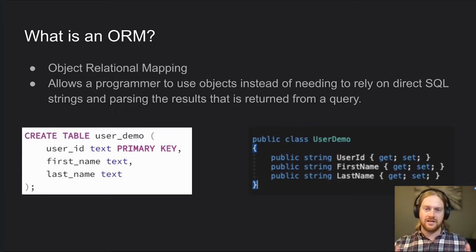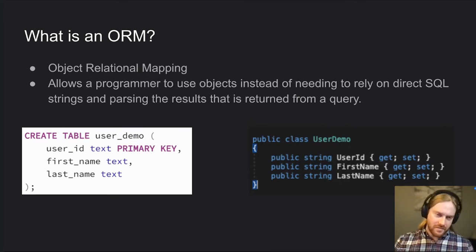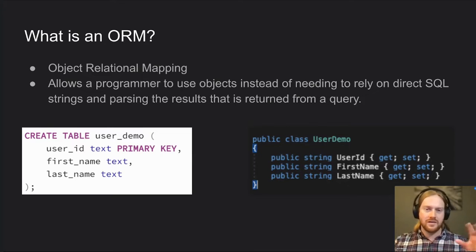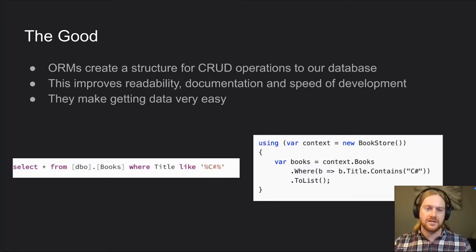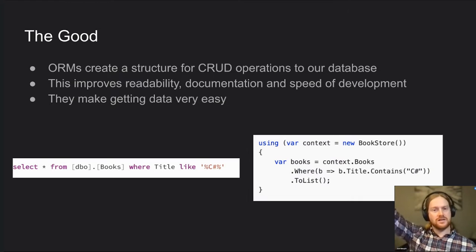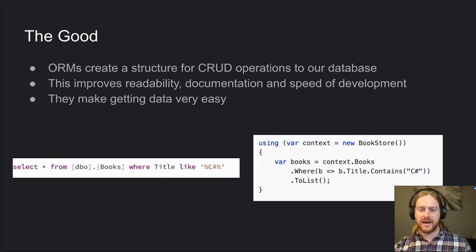ORMs abstract all of that, which is really nice, though they're not perfect. Here we have a sample of what a user demo table would look like, and what Entity Framework lets us operate on — not all the boilerplate code, but the object you actually use when interacting with the database. They make it really easy to read, document, and talk about our database objects — that's where ORMs are the shining beacon in the sky.